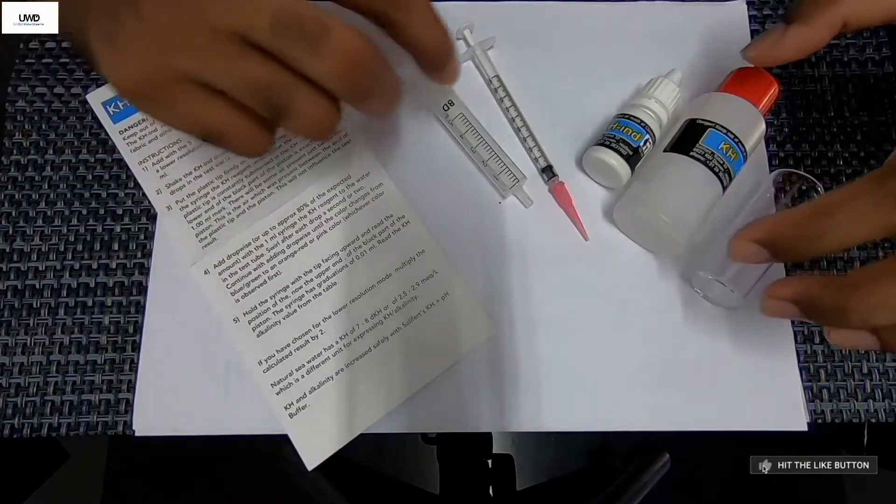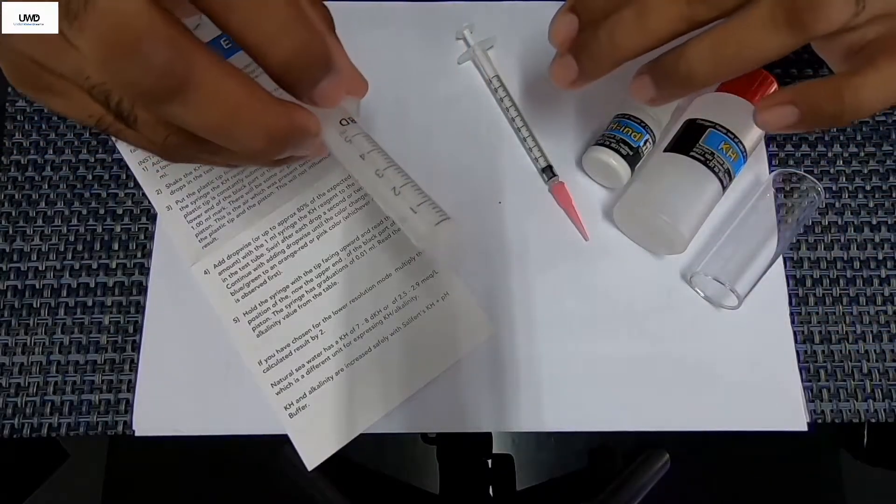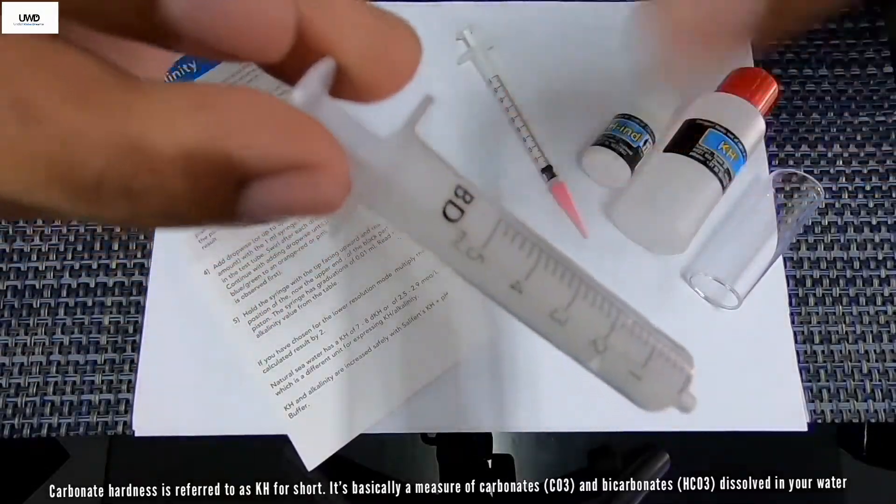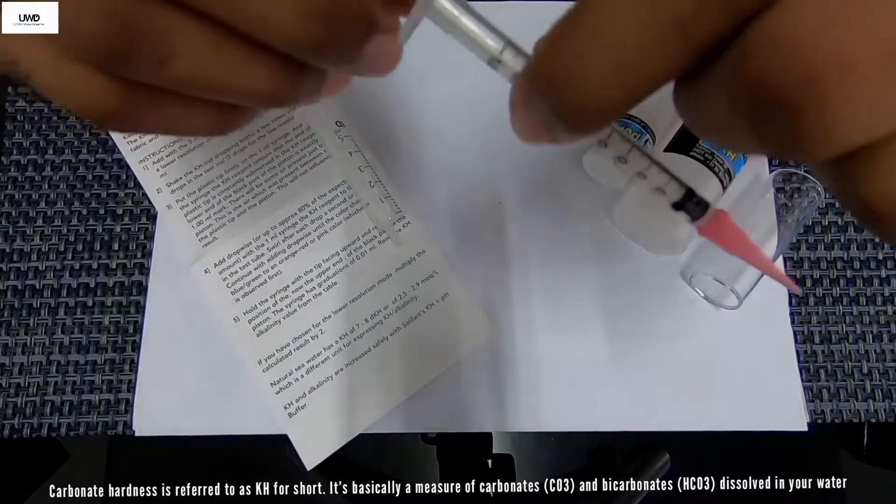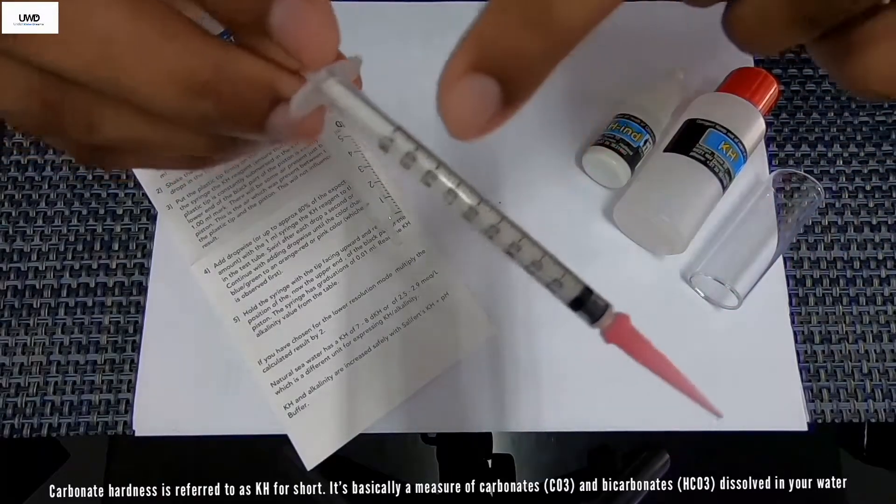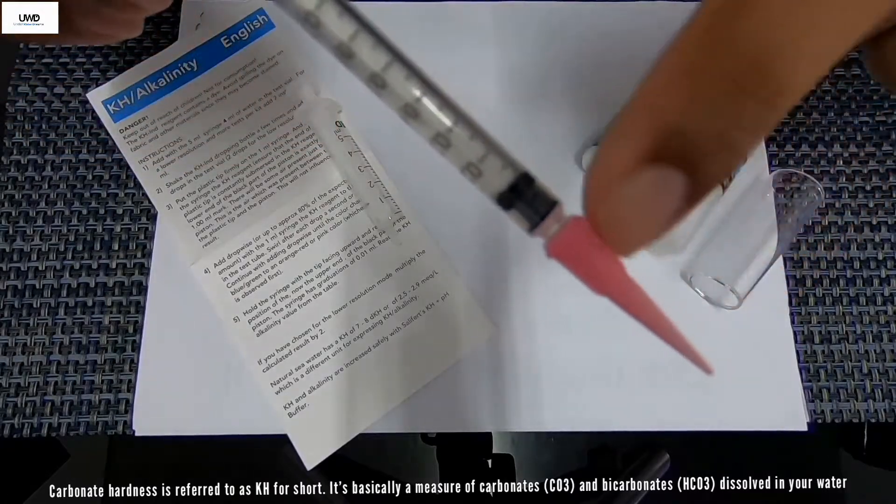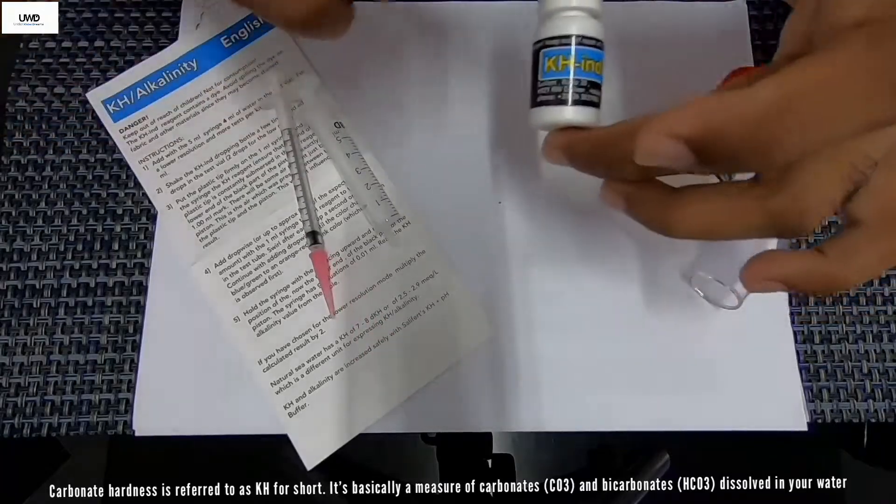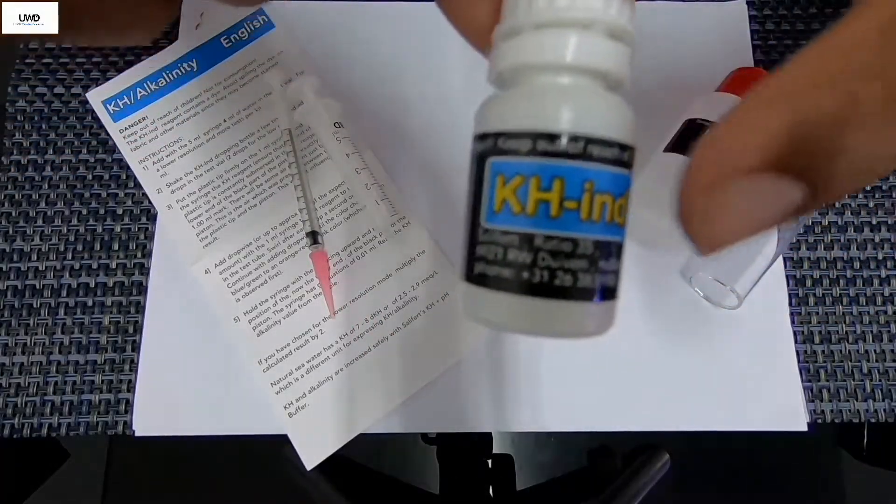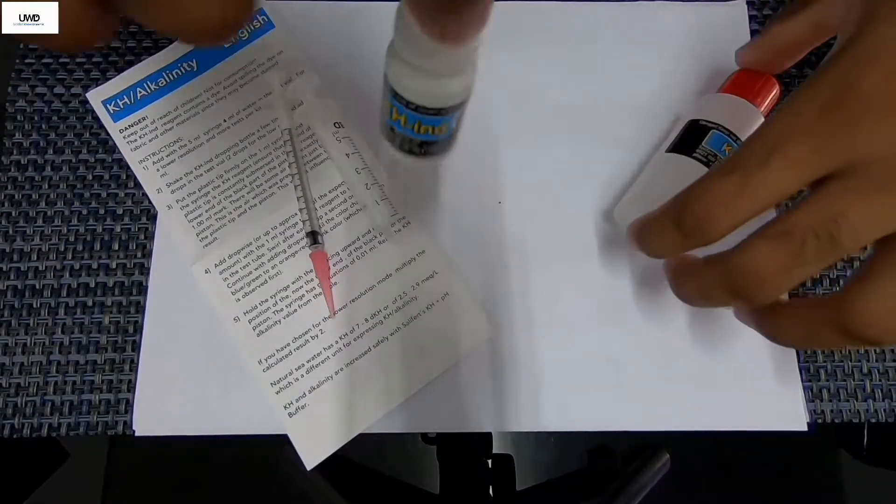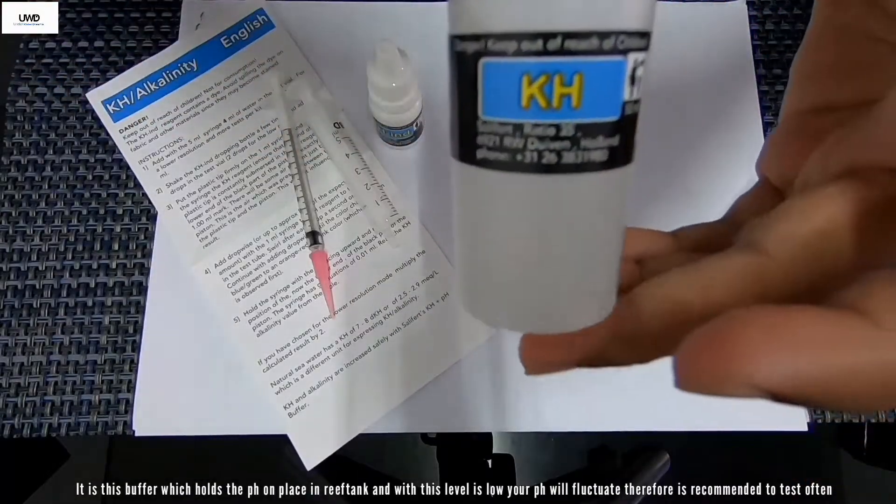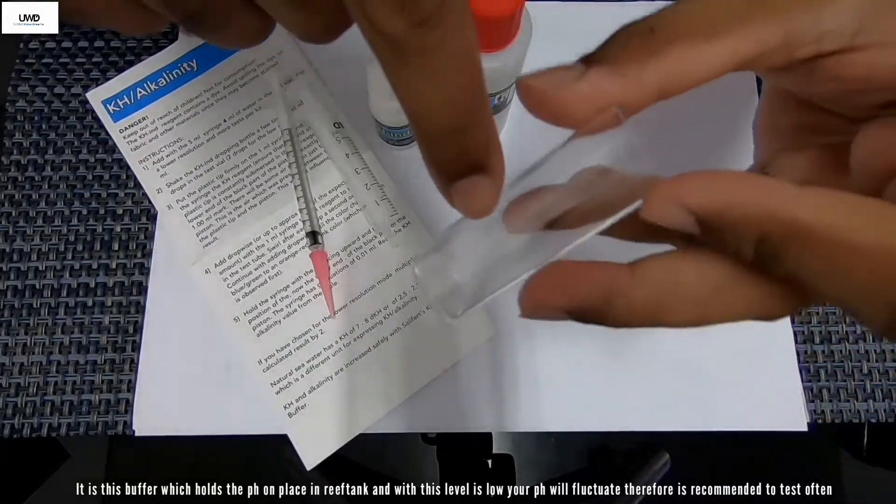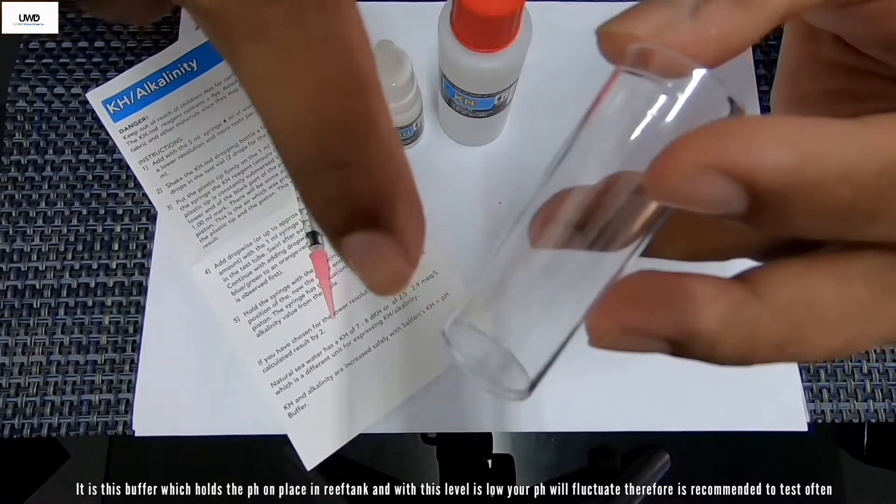There's two types of syringes: one is to draw tank water here with the 5ml mark, and the smaller, thinner one to draw reagent which is a 1ml mark with this pink color tubing nozzle in front here. There's a KH indicator here, the small bottle, and a big bottle, another one is the KH reagent also. And then the last one is your test vial, this is where you're going to be mixing up your reef tank water and all the reagents.